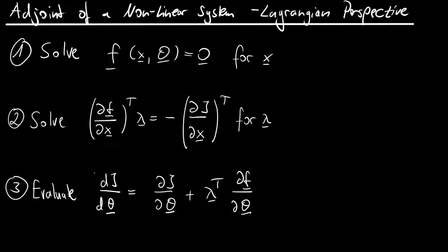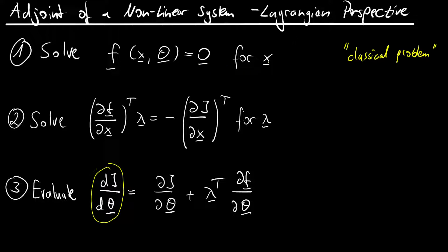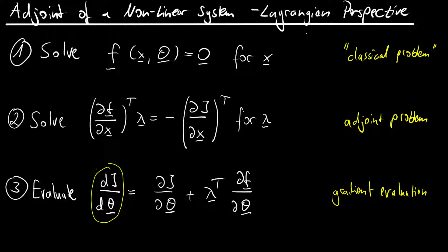Our ultimate goal is to evaluate the sensitivities of a scalar-valued loss function with respect to some parameters theta. These parameters theta appear in an implicitly given relation in the form of a non-linear system. To obtain these sensitivities efficiently we employ the adjoint method, which consists of: first, the classical problem; then the adjoint problem; and then the gradient or sensitivity evaluation — both of which we derive using the Lagrangian perspective.